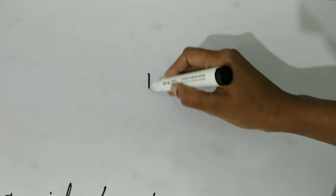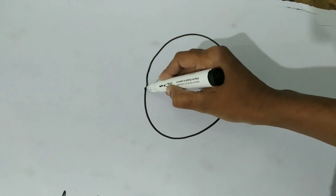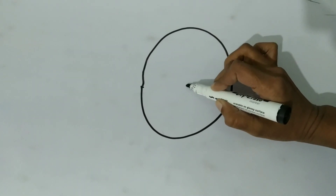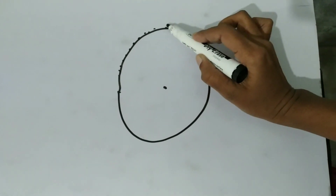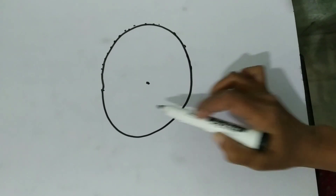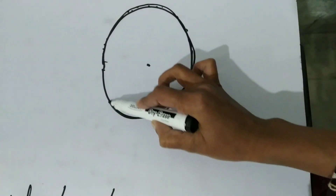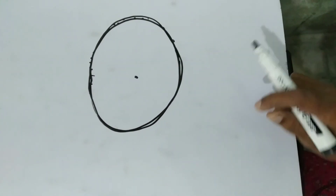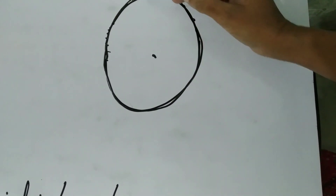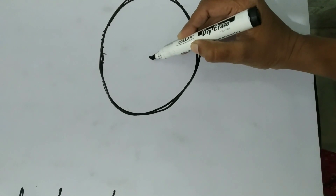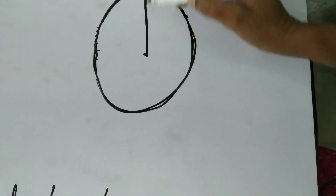जैसे यहाँ एक circle है, यह circle का center point है, इस पर different different points हैं। इन सब को join करते गए, तो यह circle बन गया। यह सारे points center point से same फासले पर हैं, और center से किसी एक point से मिला दिया, तो यह कहलाएगा radius.